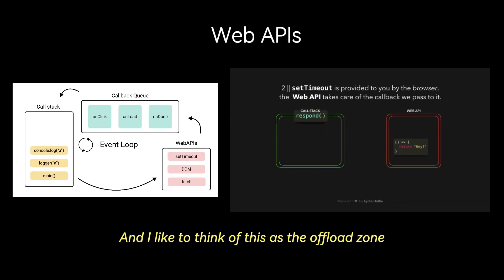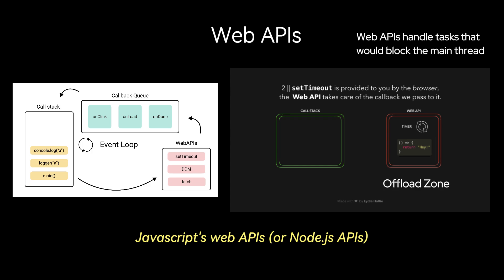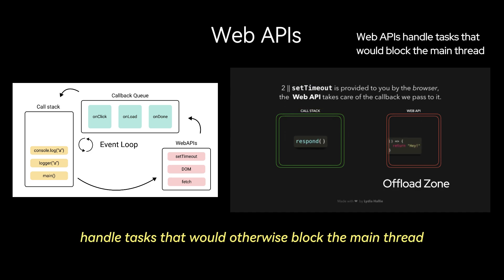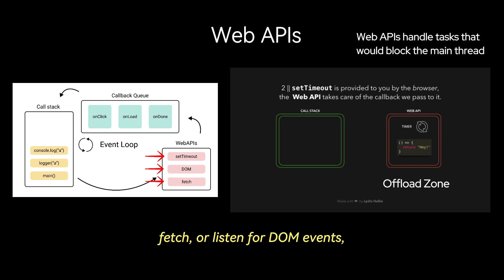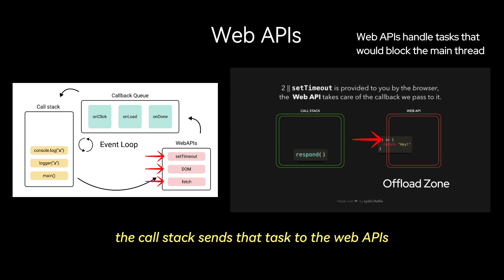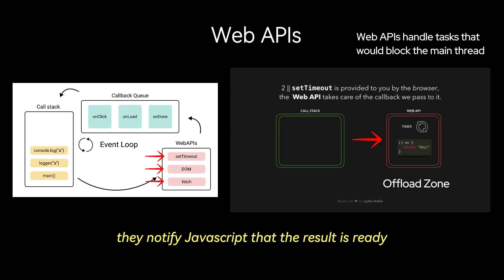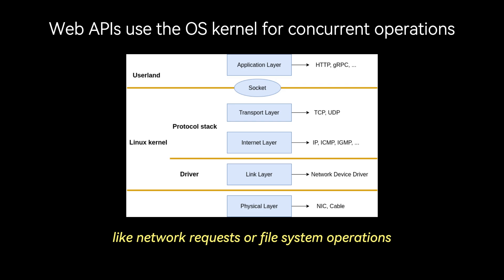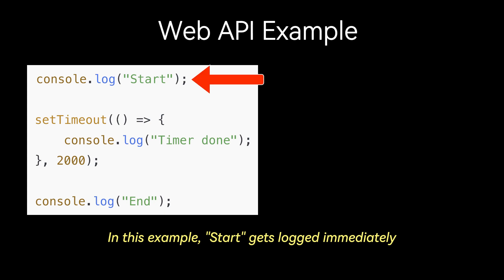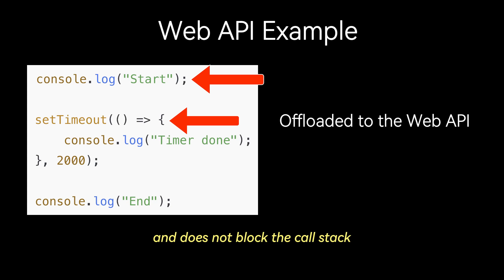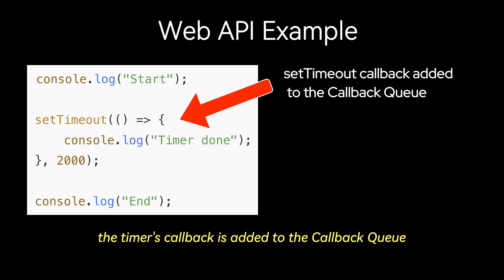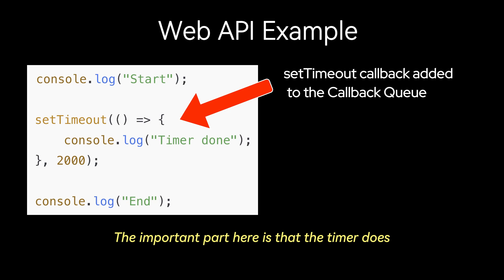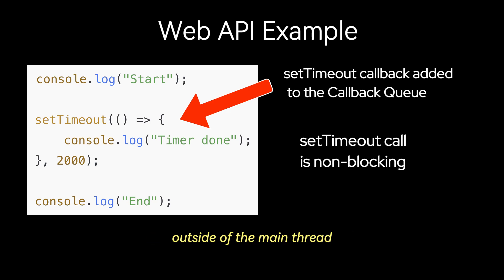This is where web APIs come in — I like to think of this as the offload zone. JavaScript's web APIs or Node.js APIs handle tasks that would otherwise block the main thread. When you call setTimeout, fetch, or listen for DOM events, the call stack sends that task to the web APIs. These APIs work in the background, and once they're done, they notify JavaScript that the result is ready. Many web API functions, especially those dealing with I/O like network requests or file system operations, interact with the operating system's kernel that can handle these operations concurrently. In this example, start gets logged immediately, setTimeout is offloaded to the web API and does not block the call stack, and then end gets logged immediately. After two seconds, the timer's callback is added to the callback queue and waits for its turn. The important part is that the timer does not pause the call stack — it gets handled in the background, outside of the main thread.